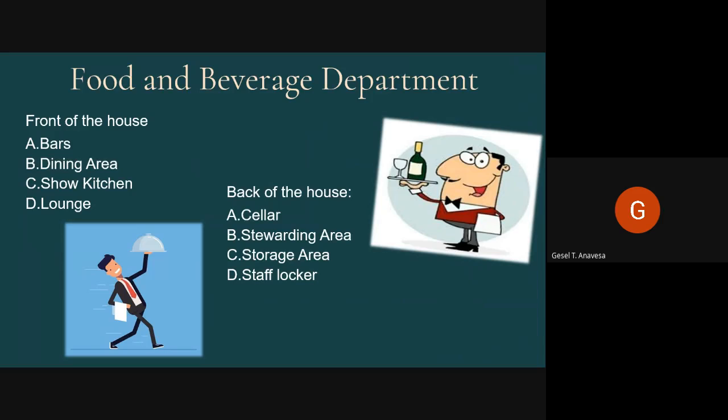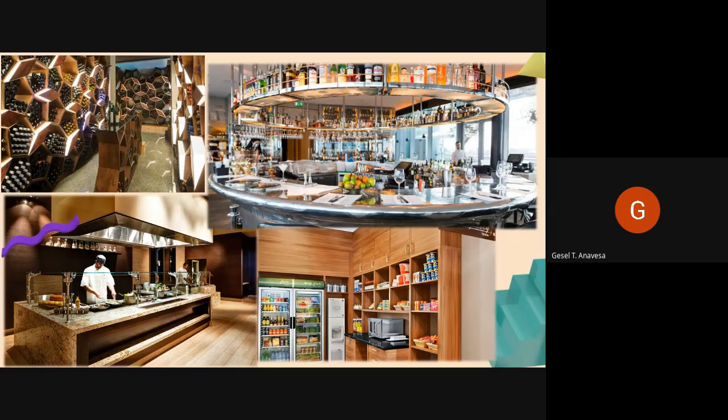The storage area is classified into three types: dry ingredients, frozen ingredients, and refrigerated. Ingredients are stored and categorized based on their condition. Staff lockers are where employees store their important belongings, each with their own unique password or key. Since employees cannot carry personal items while on duty, a specific storage area is provided for them. These are examples of sub-departments in the Food and Beverage Department.